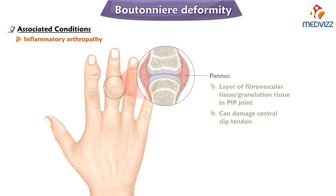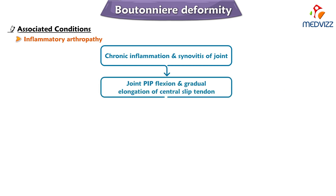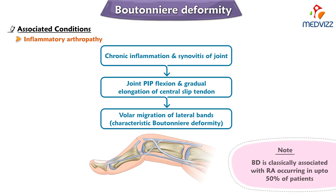Chronic inflammation and synovitis of the joint may result in persistent proximal interphalangeal joint flexion and gradual elongation of the central slip tendon — also mainly seen in rheumatoid arthritis. This leads to subsequent volar migration of the lateral bands, resulting in the characteristic boutonnière deformity. Therefore, boutonnière deformity is classically associated with rheumatoid arthritis, occurring in up to 50% of patients with this condition.